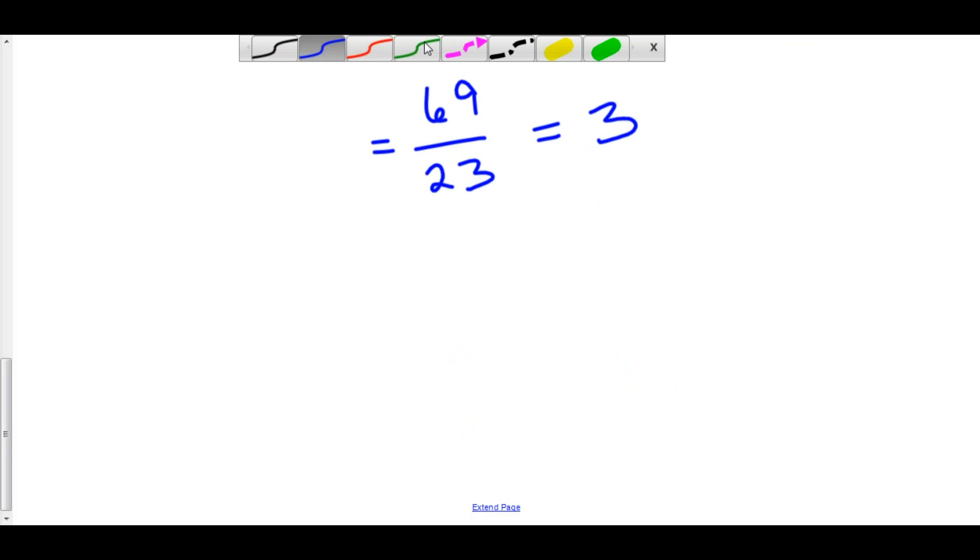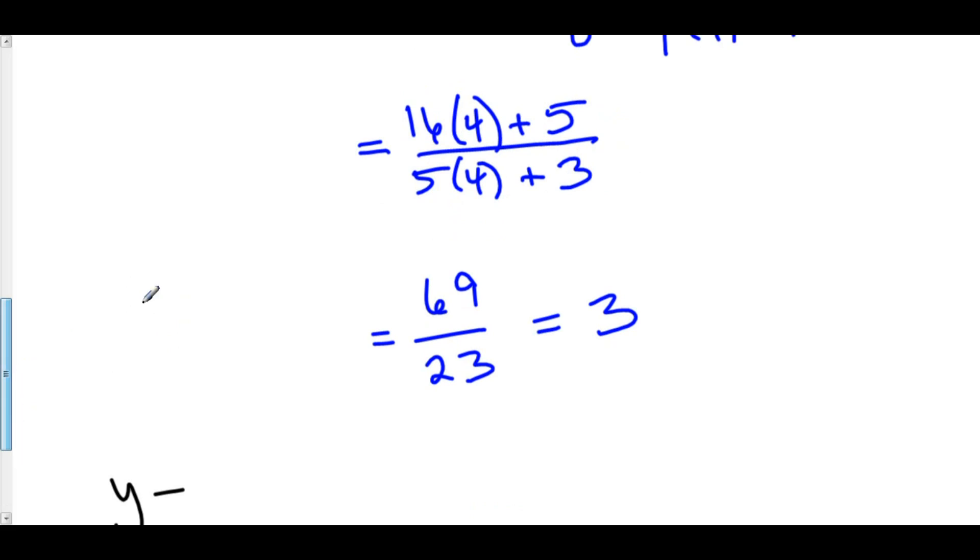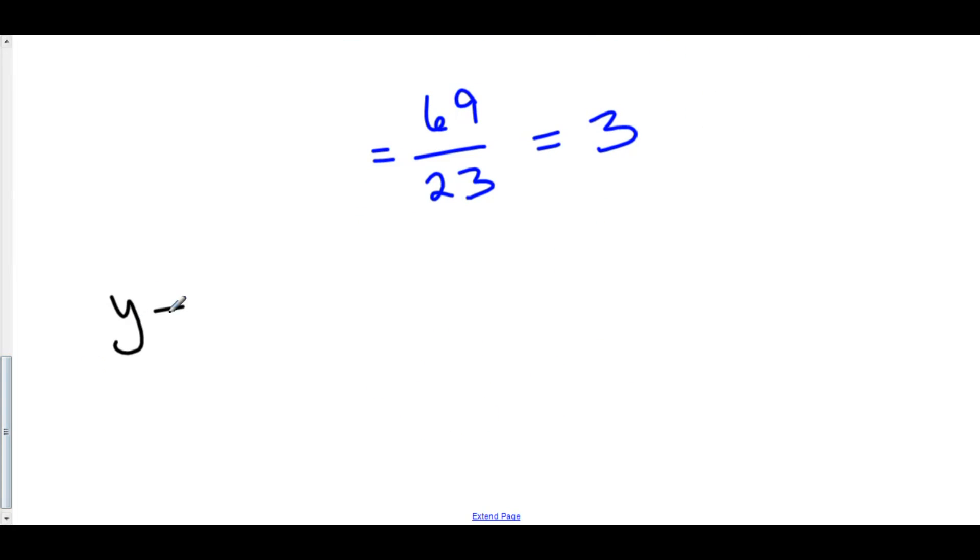We can now create our linearization. We have y minus y1 which is plus 1 equals 3 or slope times x minus 4. This means that f of x is approximated by l of x which equals negative 1 plus 3 times x minus 4.